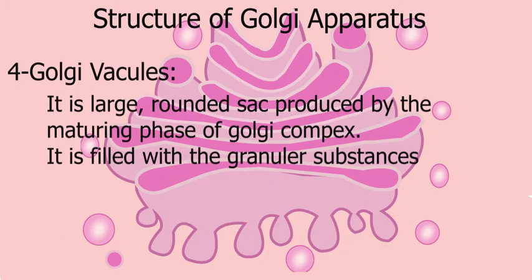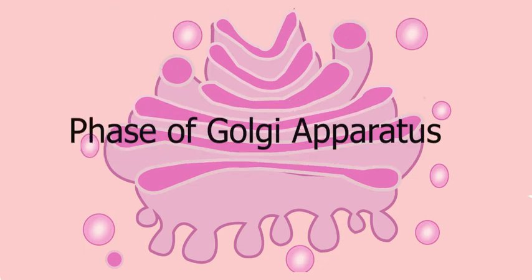Golgi vacuoles are large rounded sacs produced by the concave, or maturing phase, of the Golgi complex. They are filled with granular substances. Cisternae and vesicles together form the Golgi complex.